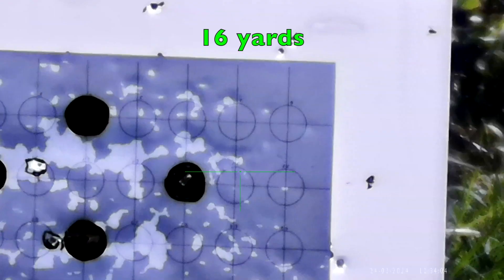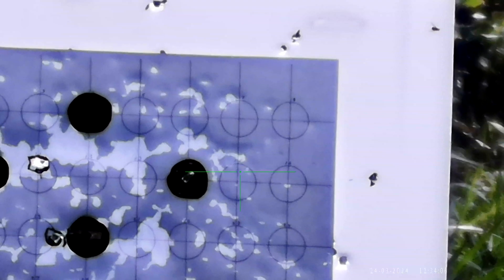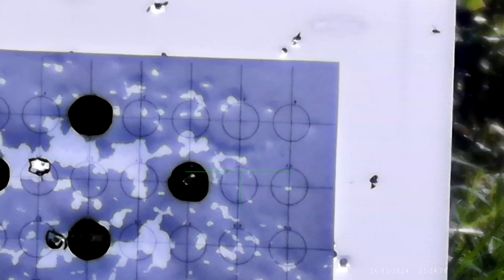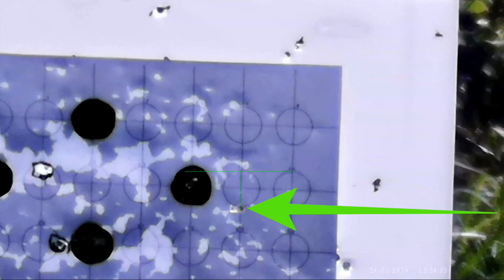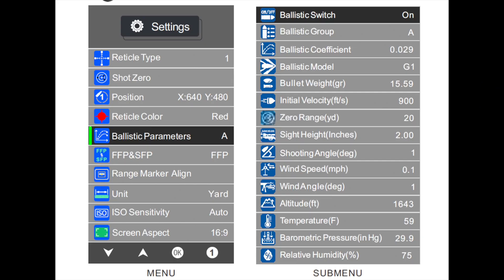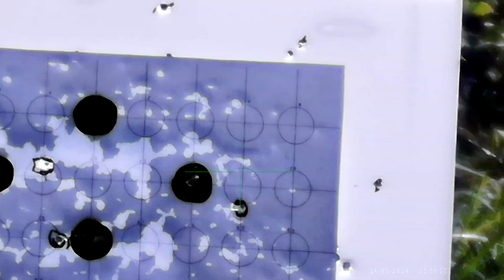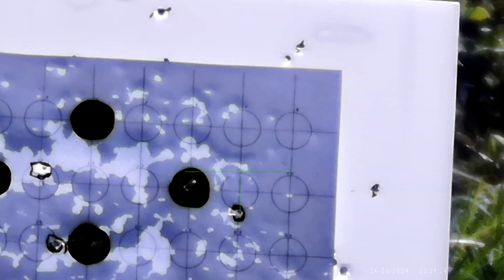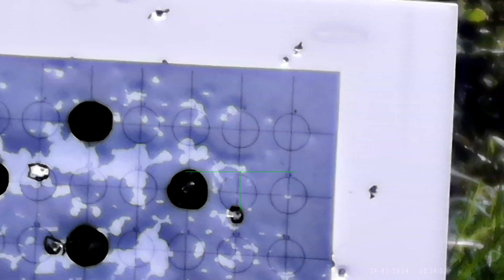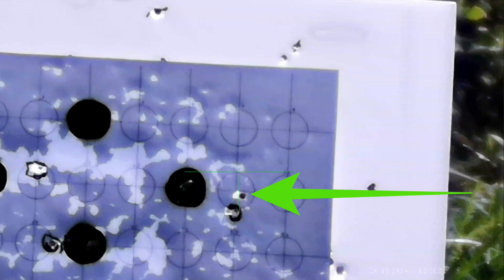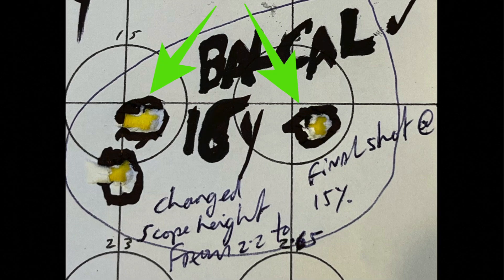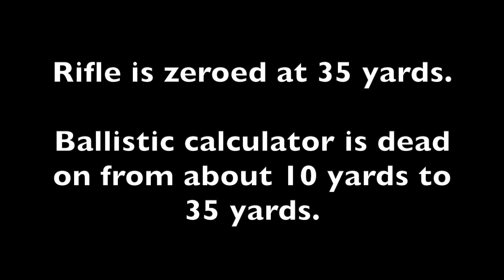The ballistic calculator has generated a holdover point, which you can't see, but it looks like this. And I'm holding it over the center of the circle here. Point of impact was here, so it's shooting low at 16 yards. To correct this, I went into the ballistic calculator menu, and I increased the scope height from 2.2 inches to 2.6 inches. This causes the ballistic calculator to generate a lower point of aim, effectively raising the point of impact. I'm now holding over here, and the point of impact is now dead on, or as close as I care to get it at 16 yards. So my rifle is now zeroed at 35 yards, and the ballistic calculator is covering everything from about 10 yards out to 35 yards.